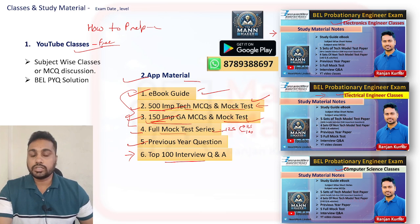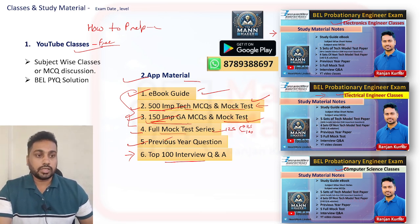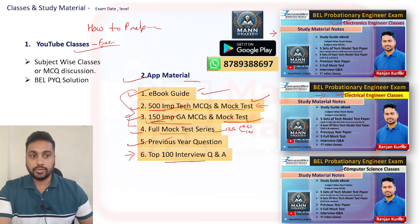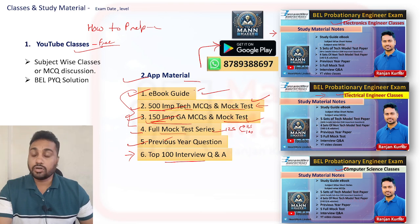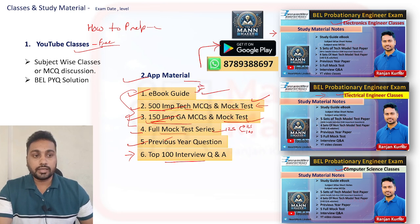So, the first priority is to cover the ebook guide, then the 500 important questions, then the 150 important questions, and after completing those, go for mock tests and previous year questions. All these things are available in the app — just download it, go to the courses section, and you will find everything.